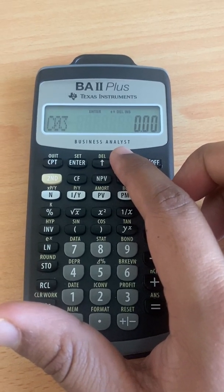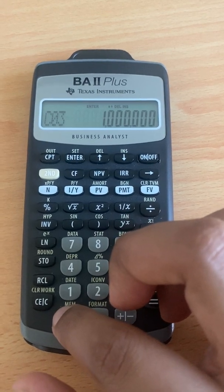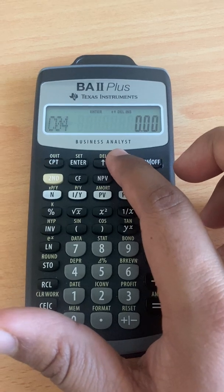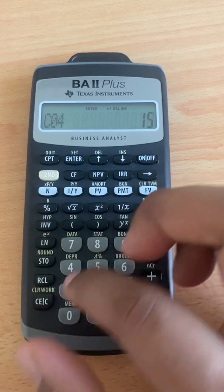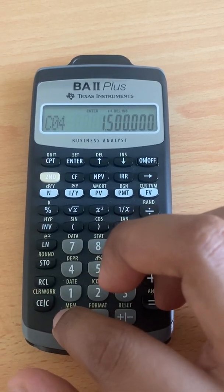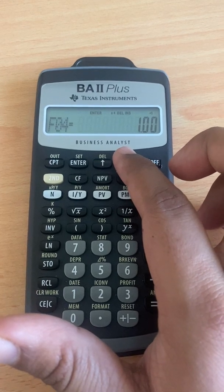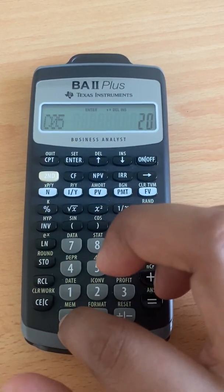Then we go for 1 million. Press enter, then F03, nothing to check. CF4 is 1.5 million. Press enter, F04, nothing to change. Then 2 million.